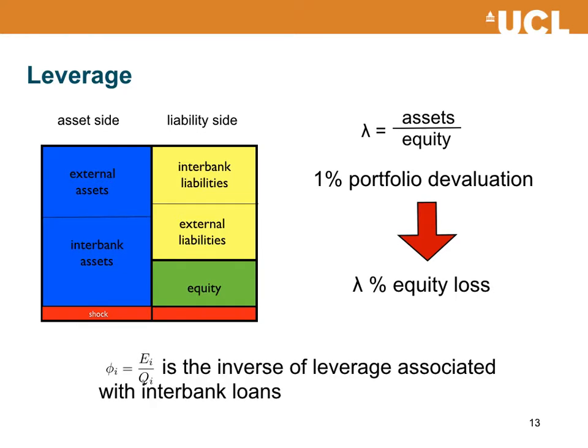Looking at the threshold we defined — the ratio between the equity of the bank and the amount of money lent by the bank — this is essentially the inverse of a leverage, specifically the leverage associated with interbank loans, considering only the part of the assets associated with interbank lending. So the threshold in the linear threshold model is basically related to 1 over leverage in financial terms.